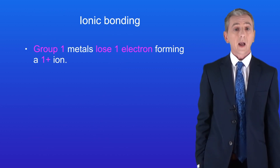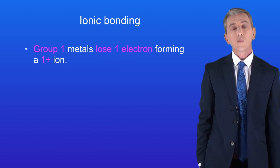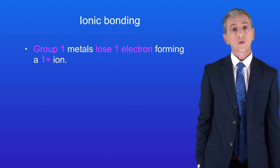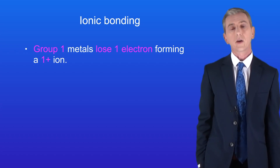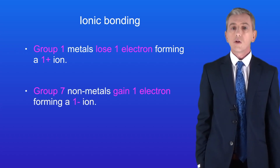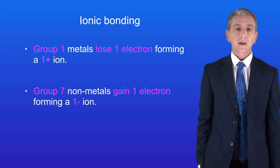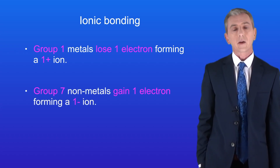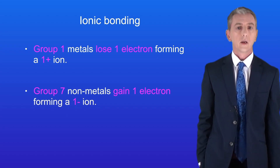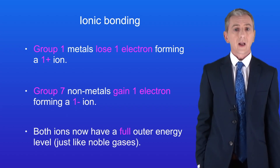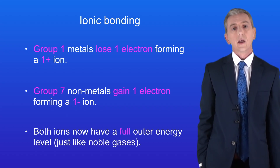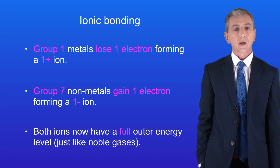So remember that during ionic bonding, group 1 metals lose one electron, forming a 1+ ion. Group 7 non-metals gain one electron, forming a 1− ion. Both ions now have a full outer energy level, just like noble gases.